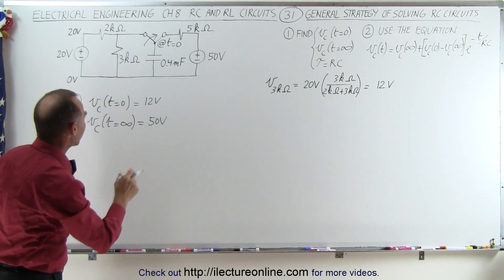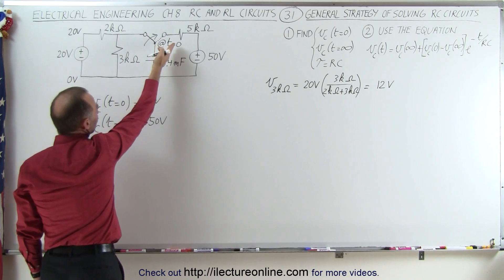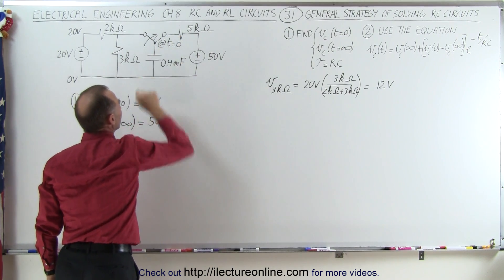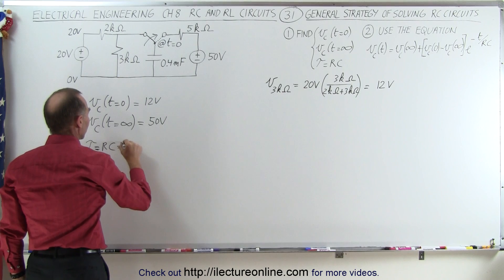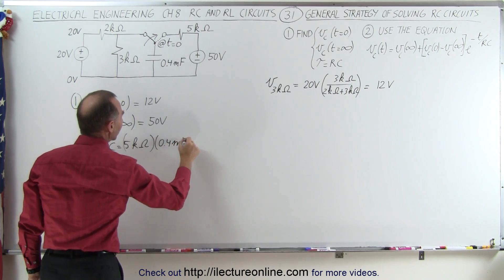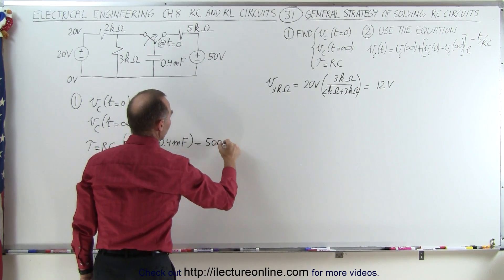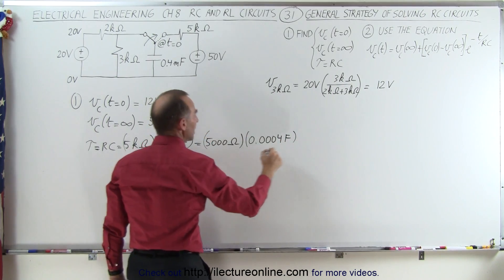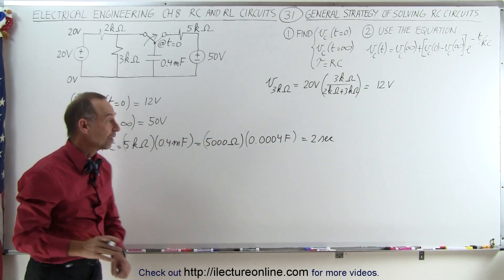The last thing we need is the time constant. The time constant equals resistance times capacitance, calculated after the switch moves over during the transient period when current flows through the capacitor and resistor. The time constant equals this resistor times this capacitor: 5 kΩ multiplied by 0.4 millifarads, which is 5000 times 0.0004, equal to 2 seconds.